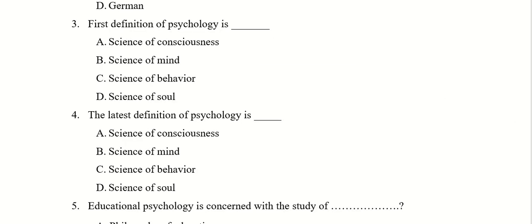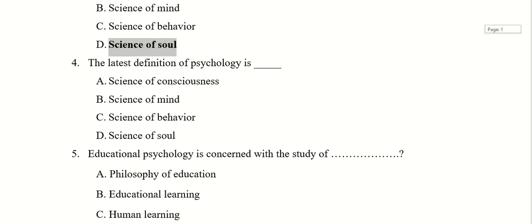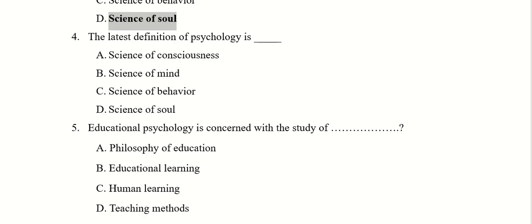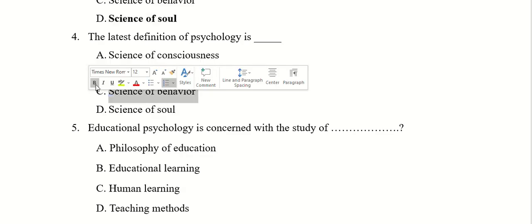First definition of psychology is science of consciousness, science of mind, science of behavior or science of soul. Right answer is D, science of soul. The latest definition of psychology is science of consciousness, science of mind, science of behavior or science of soul. Right answer is C, science of behavior.